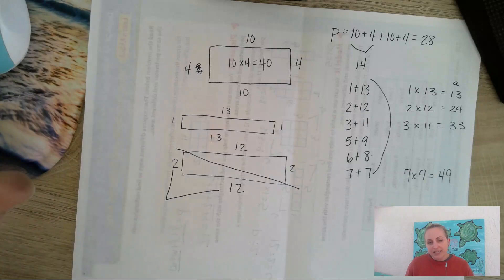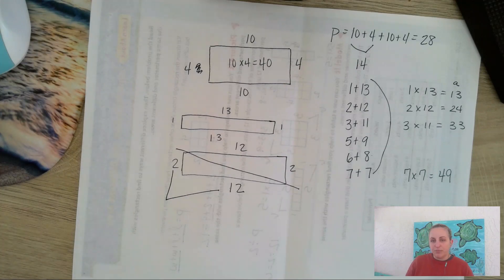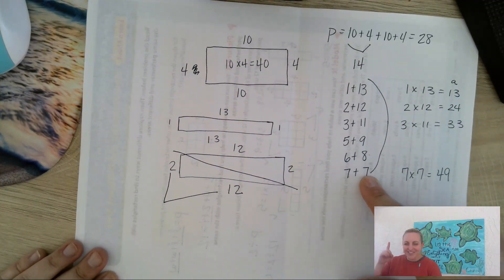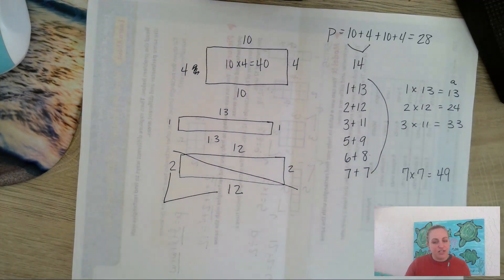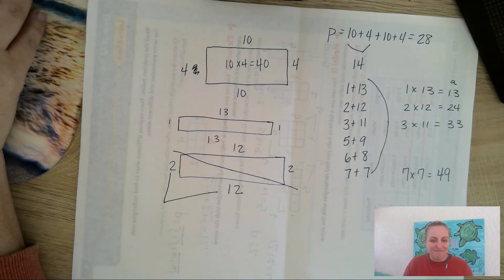So I want you to practice it. Remember the formulas are going to help you. If it has the same area, you're going to use your factors. If it has the same perimeter, you're going to use addition — split it in half and add. You've got it. If you need to re-watch the videos, re-watch them. I will see you guys in the next video for our review for our geometry unit. Bye guys!